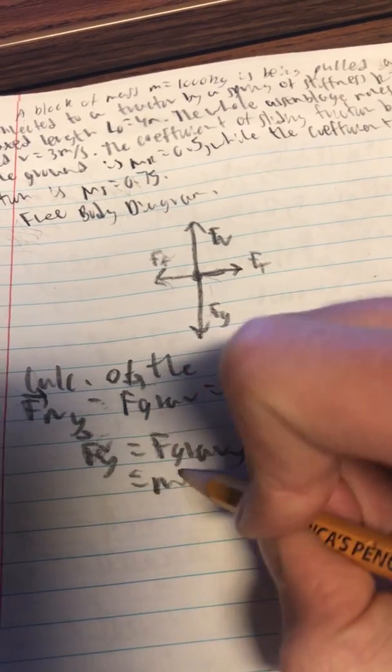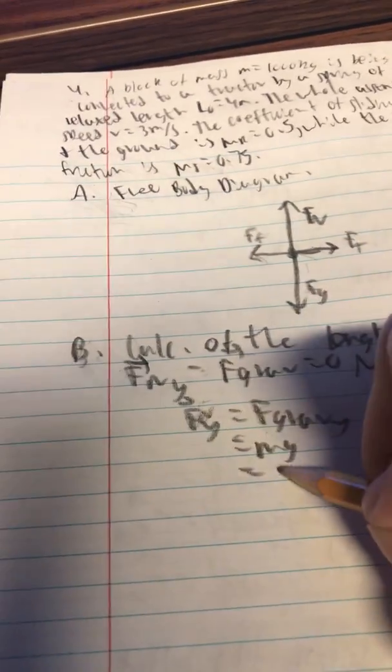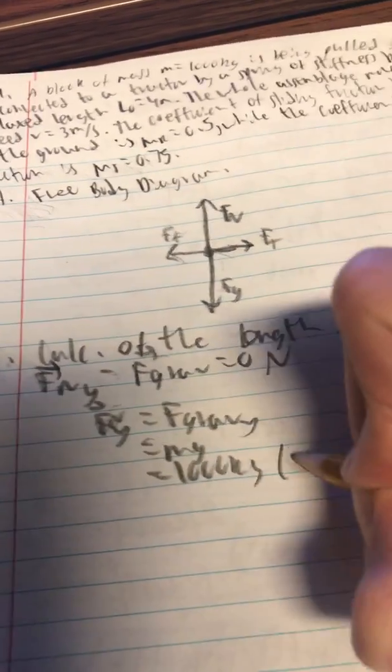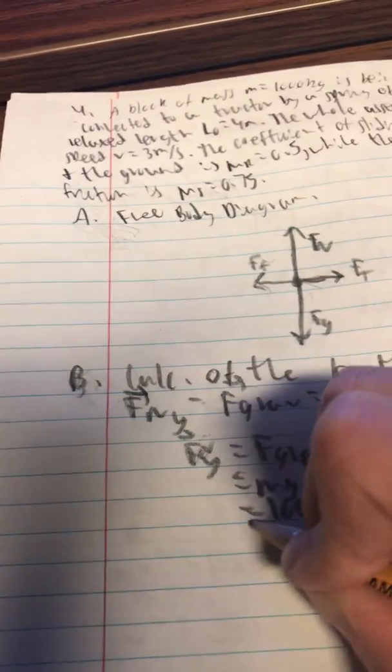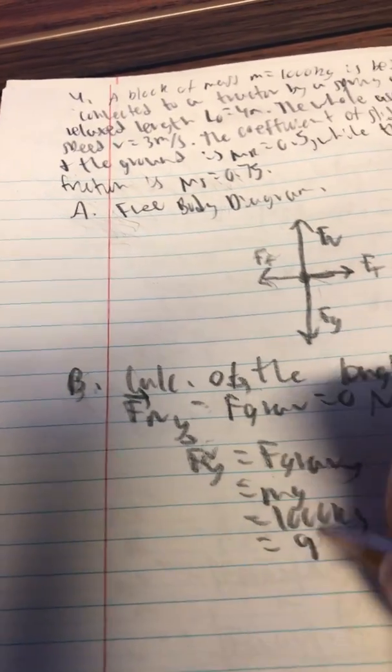So that will equal mg which is 1000 kilograms times 9.8 newtons per kilogram which is 9800 newtons.